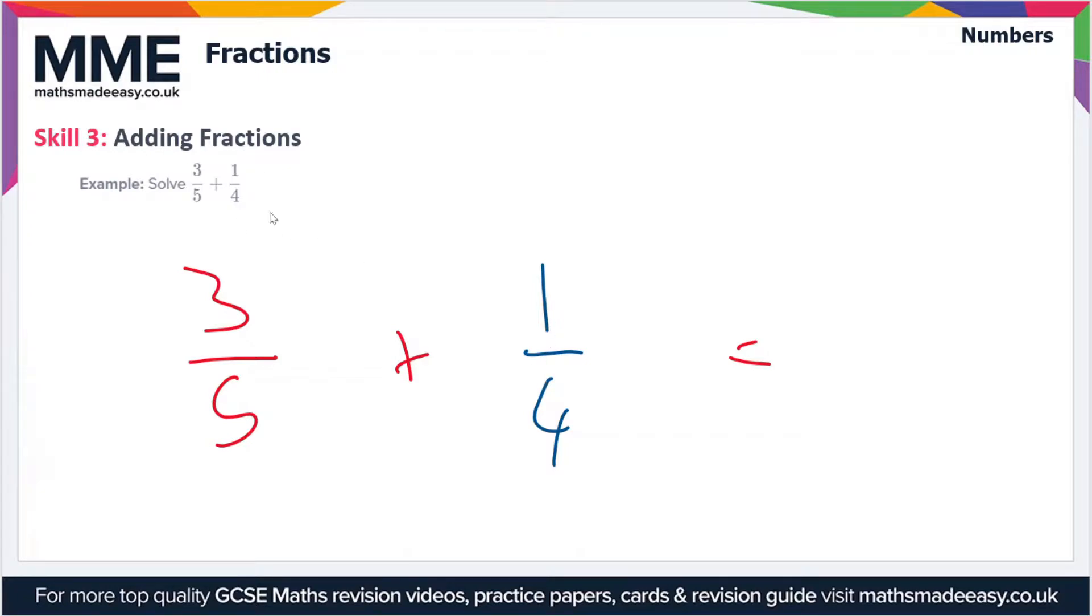So in this case we multiply this three and the five by the opposite denominator which is four. So three times four over five times four. And we do the same with the other fraction, so we've got one times five over four times five. So we can simplify this now.